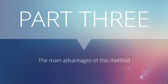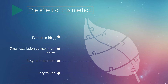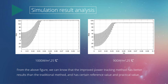Now we see part 3. The advantages of this method are four: the first is faster tracking, the second is smaller oscillation at the maximum power point, the third is easy to implement, and the fourth is easy to use. From the picture, the improved power tracking method has better results than the traditional method and has certain reference and practical value.